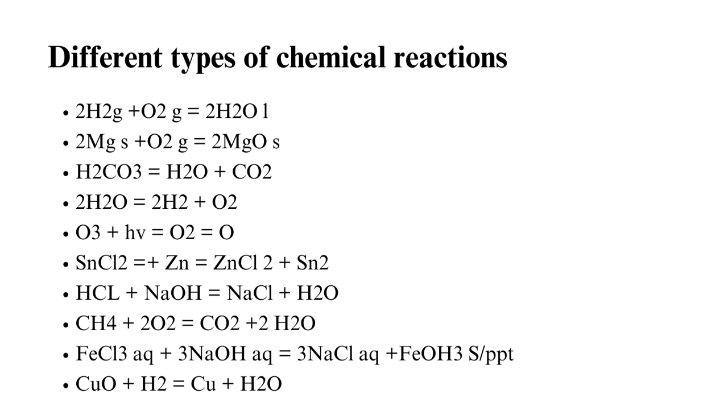Double displacement reaction examples include adding a few drops of lead 2 nitrate to a potassium iodide solution. The results are lead 2 iodide, which is a yellow precipitate.